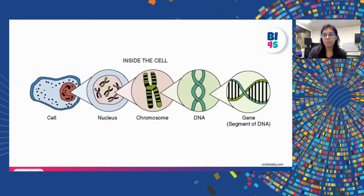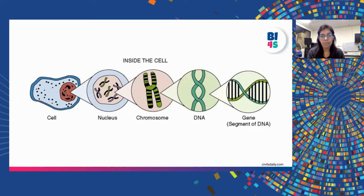Before we delve into specifics, let's discuss the cellular hierarchy, which is fundamental to understanding the composition of a human body. A human body contains trillions of cells, and within each cell there is a nucleus. Inside the nucleus you will find chromosomes, which house your DNA, and a gene, which is a segment of DNA, is also present within the chromosomes.